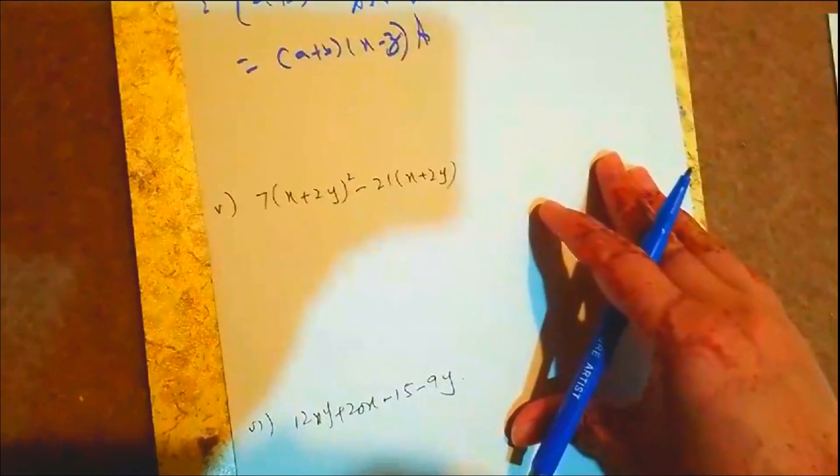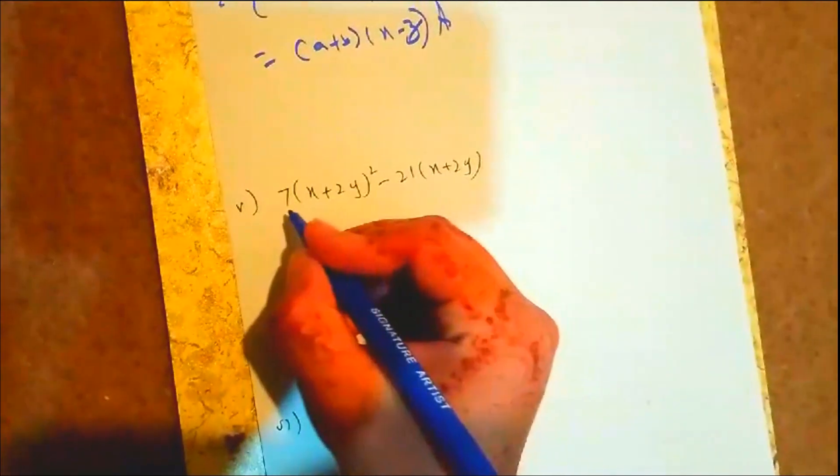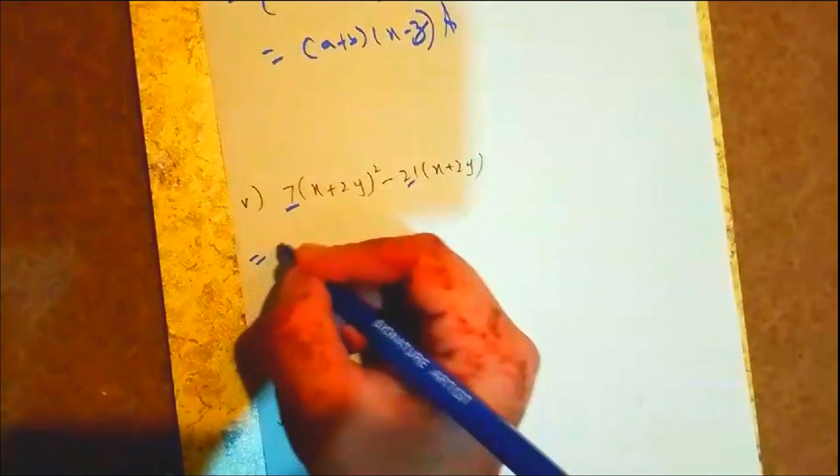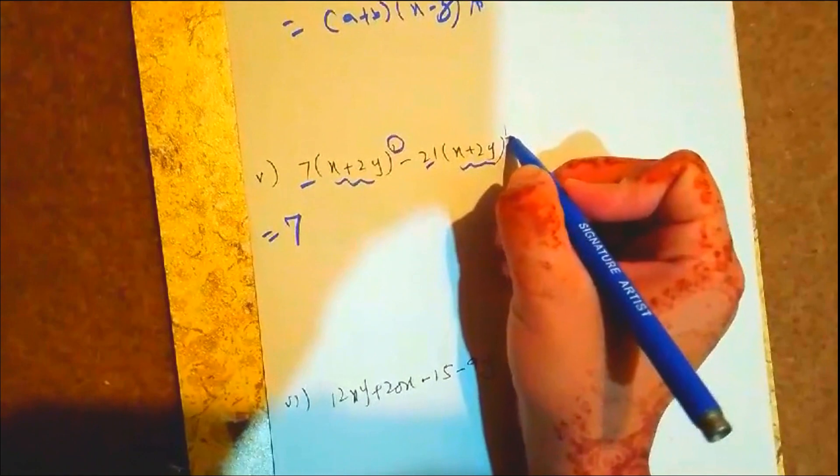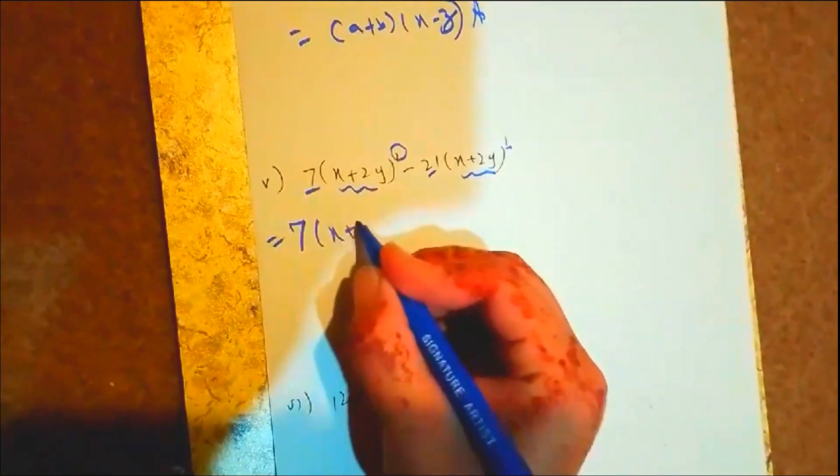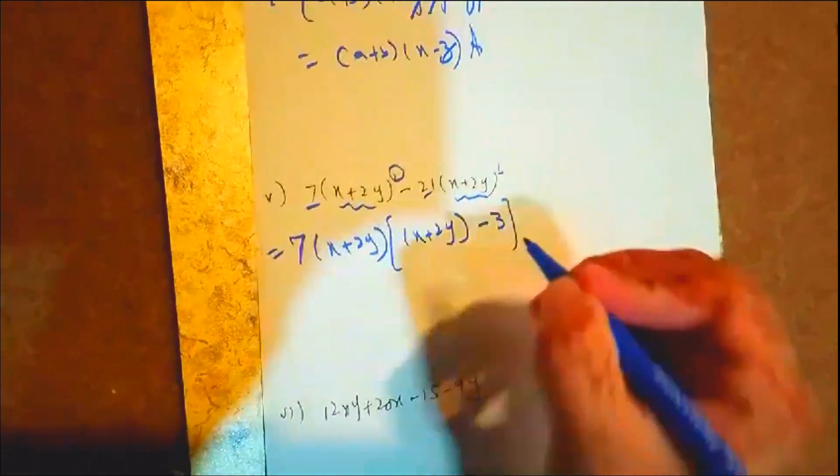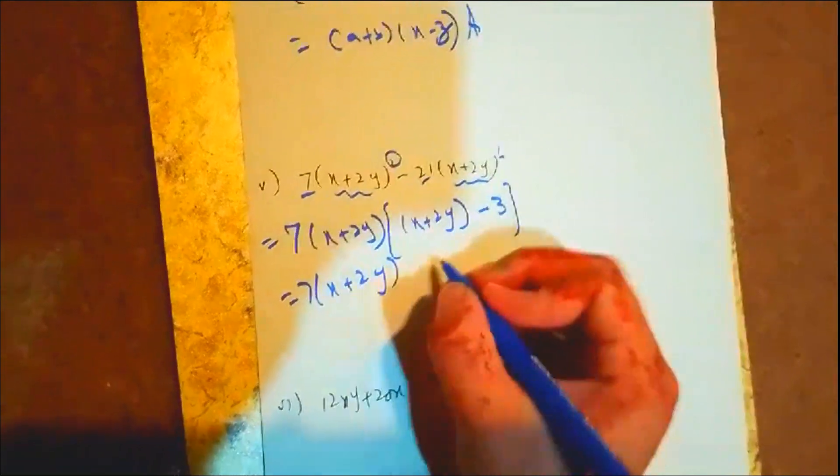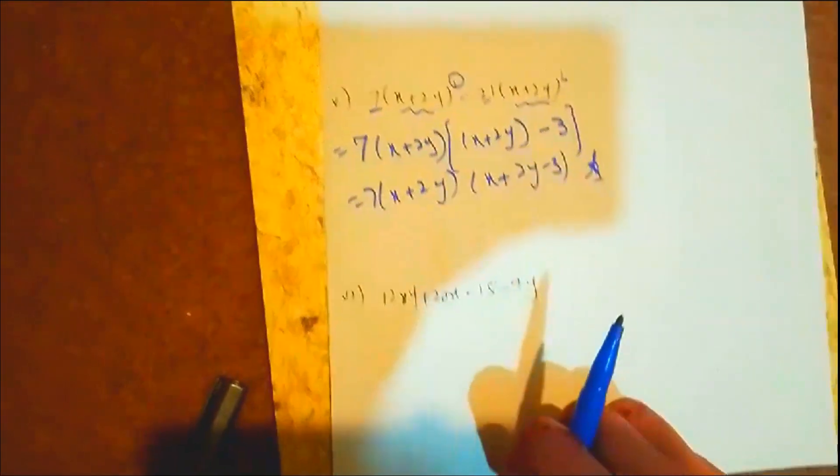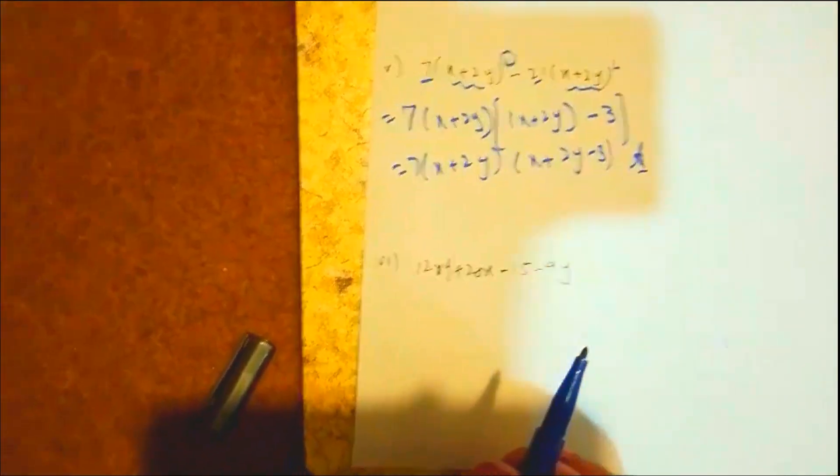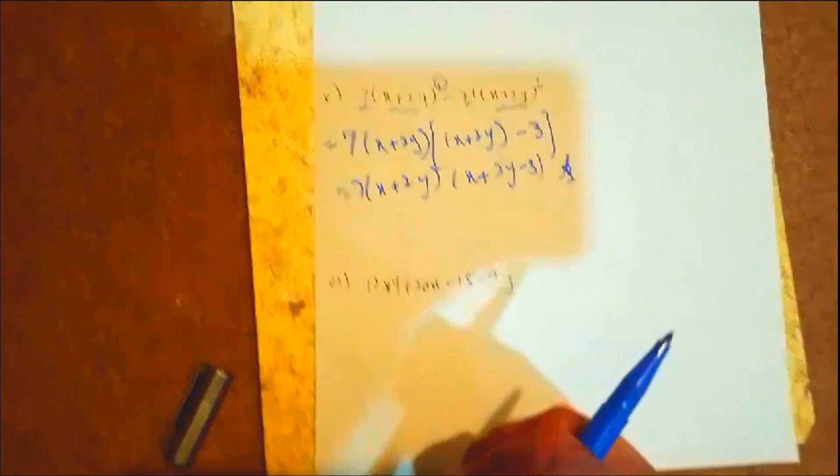(a + b) is common. Part 5: 7(x + 2y) - 21(x + 2y)². First look at 7 and 21 - 7 is common. See the terms, they're the same, just different powers. Take the smaller power. 7(x + 2y)(1 - 3(x + 2y)).